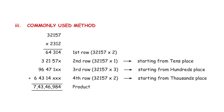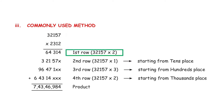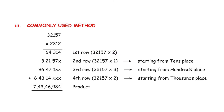Let's look at another commonly used method. Consider 32,157 × 2,312. The first step is to get the first row by multiplying 32,157 × 2 — the 2 from the ones place — giving 64,314.